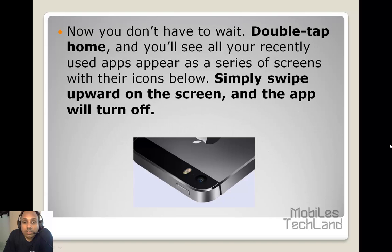But on iOS 7, now you don't have to wait. Double tap the home button and you will see all your recently used apps appear as a series of screens with their icons below. Simply swipe upward on the screen and the app will turn off — as simple as that. Why don't you try it now? Have a good day.